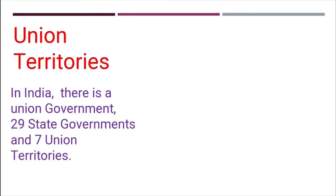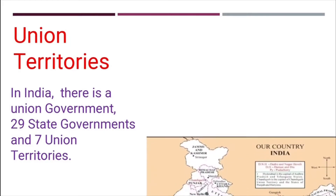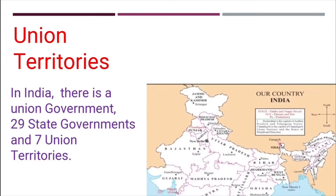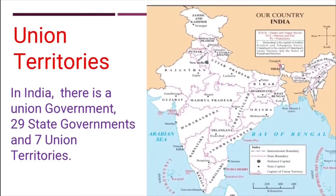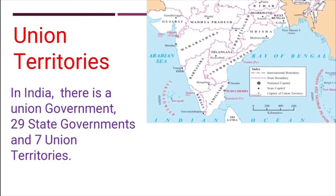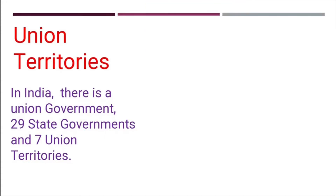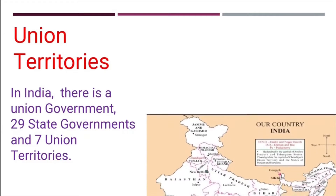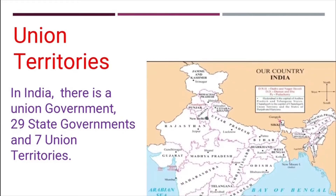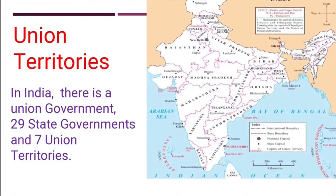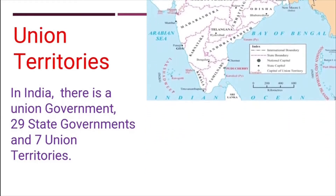Following are the 7 Union Territories. You can have a look at the map on page number 74 of your textbook, where all the Union Territories are mentioned. Those are New Delhi, Daman and Diu, Puducherry, Chandigarh, Dadra and Nagar Haveli, Andaman and Nicobar Islands, and Lakshadweep. We have 7 Union Territories, which are marked on the map of India on page number 74.